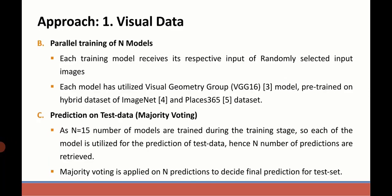Next, these 15 random samples were provided for training of the VGG16 model, which was pre-trained on ImageNet and Places365 datasets. As a result, 15 different models were trained.